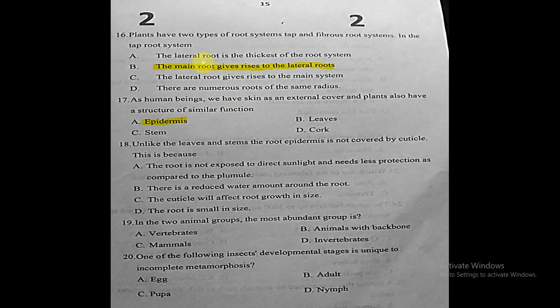Question eighteen: unlike leaves and stems, the root epidermis is not covered by a cuticle. This is because the root is not exposed to direct sunlight and needs less protection compared to the above-ground parts. The correct answer is: the root is not exposed to direct sunlight and needs less protection.